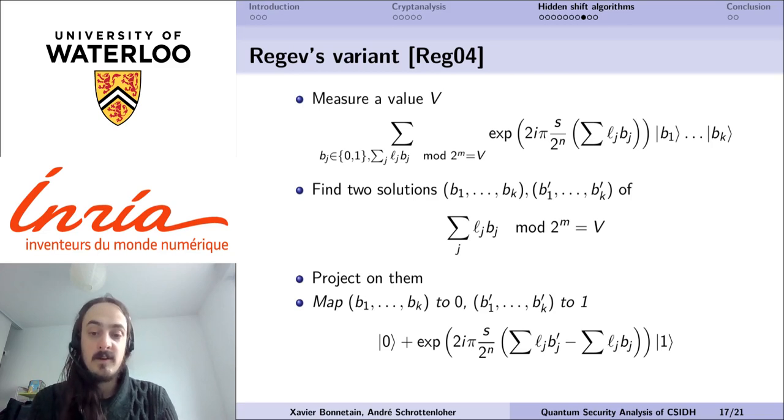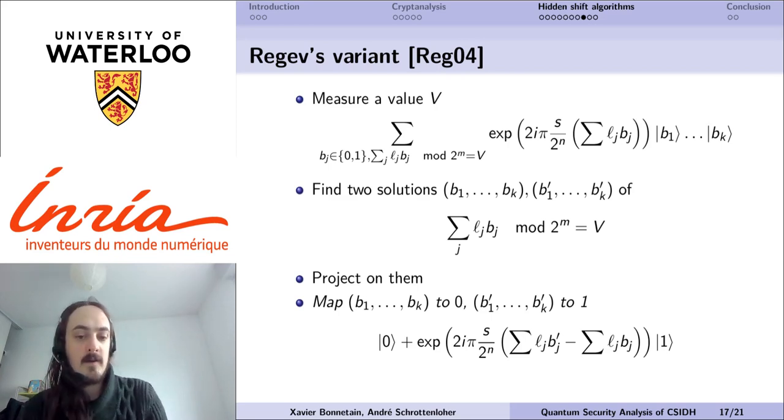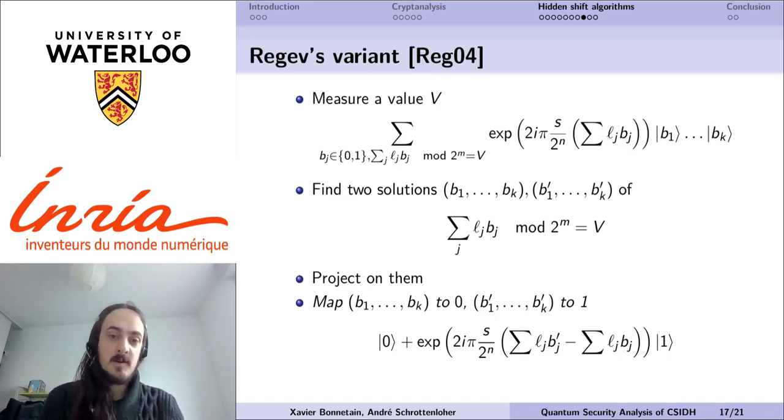Finally, we can relabel our superposition and map one of them to 0 and the other to 1. Once we've done that, we will obtain a new labeled qubit whose phase will be the difference of the two components we had found. By construction, this phase difference will be a multiple of 2 to the m.